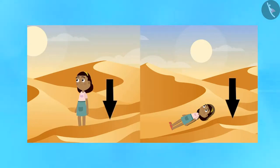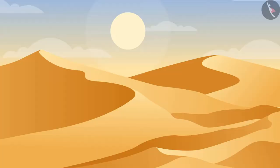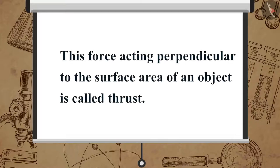In both situations, the force exerted on the sand is your body weight. We have learned that weight is the force which acts vertically downwards. Therefore, here the force is acting perpendicular to the surface area of the sand. This force acting perpendicular to the surface area of an object is called thrust.